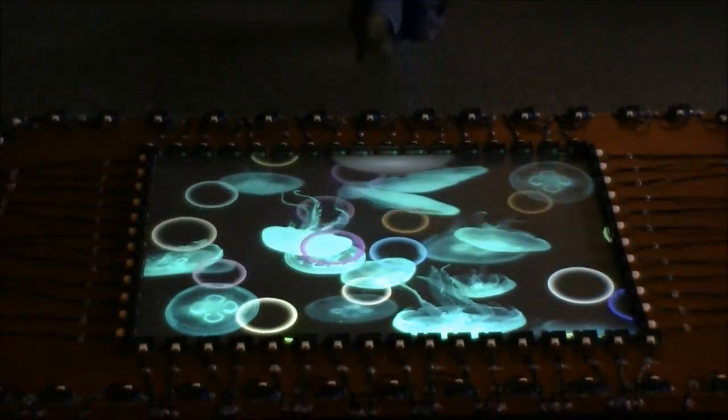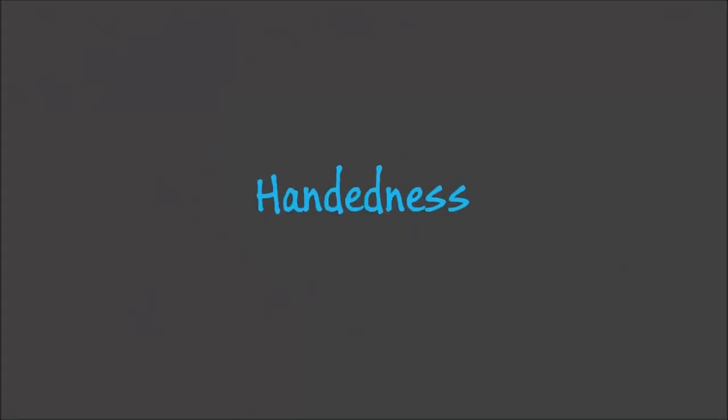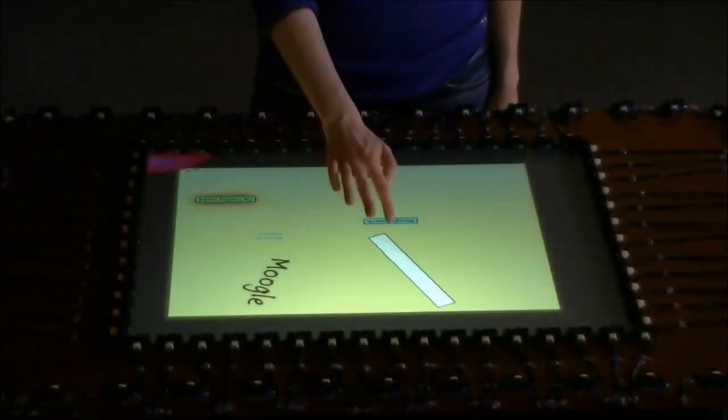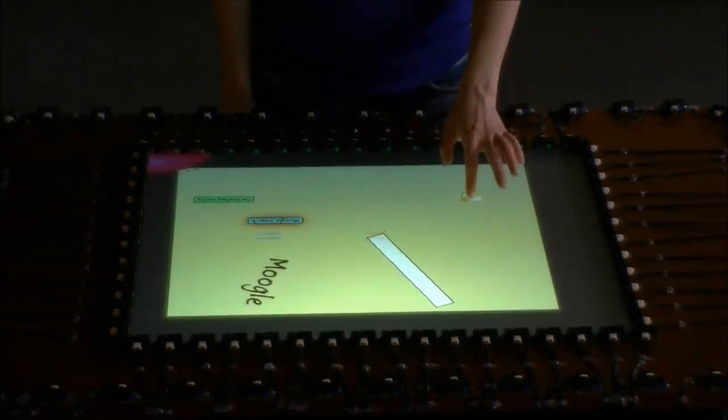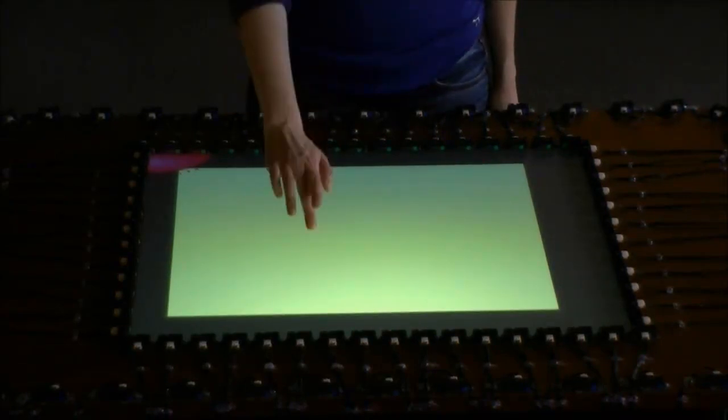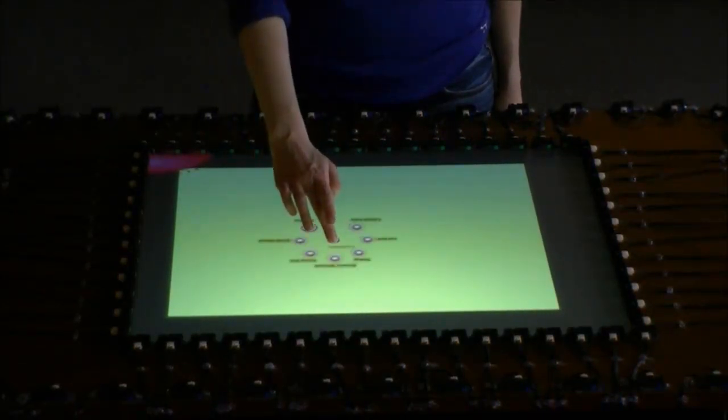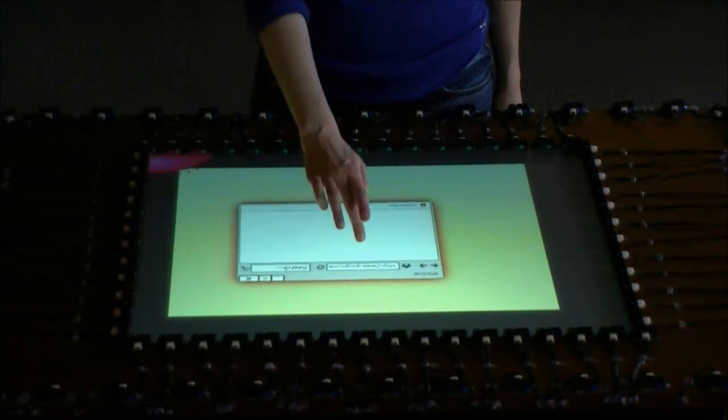With ProxySketch, different commands are assigned to each hand. For example, dangerous actions such as clear the canvas are hidden unless the user taps the sketching canvas with their non-dominant hand. When the user touches the sketching canvas with their dominant hand, a marking menu appears, allowing the user to perform more common actions.